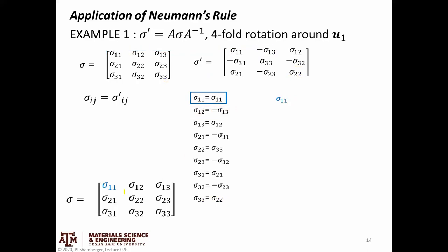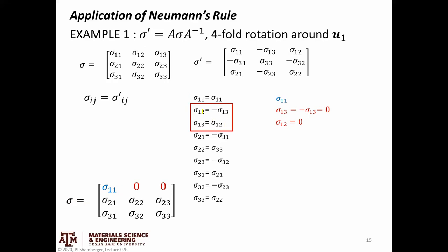Step two is to think about how this constrains the overall conductivity tensor. Going through these step by step, in some cases it won't have much effect, but in other cases it will limit what the value of a particular element can be. For example, the very first step — σ₁₁ equals σ₁₁ — doesn't really show us anything new, so that does not place any additional constraints on the top-left element of the conductivity tensor.